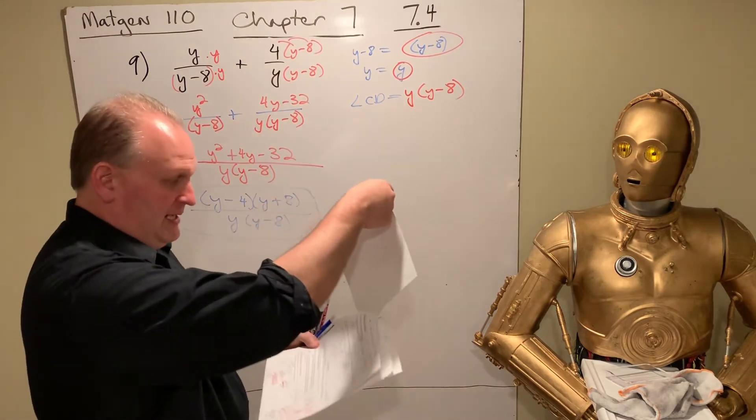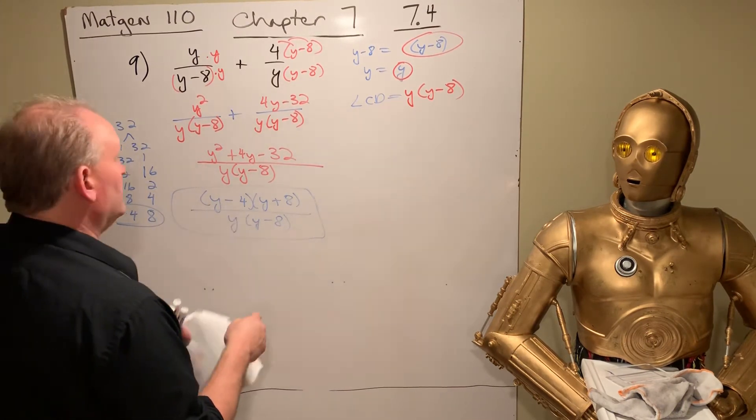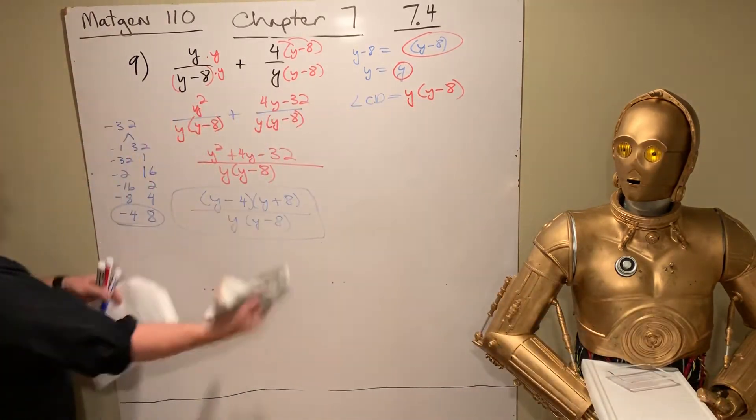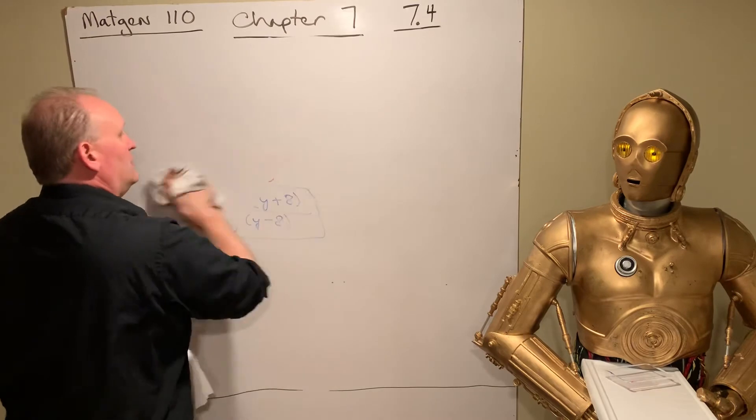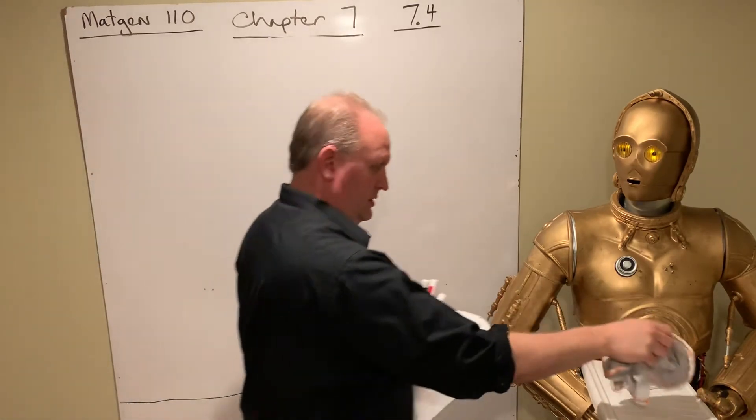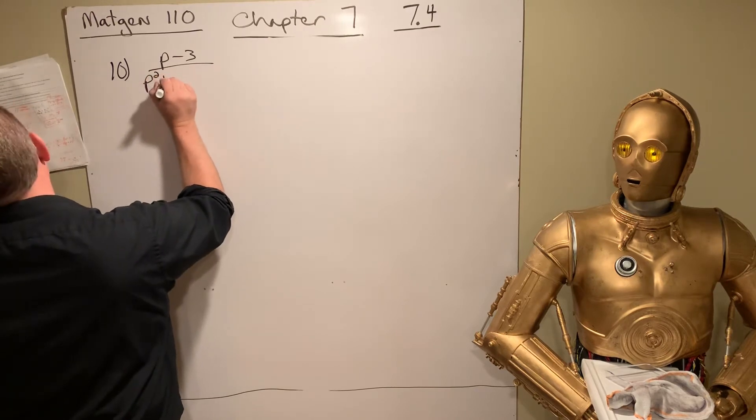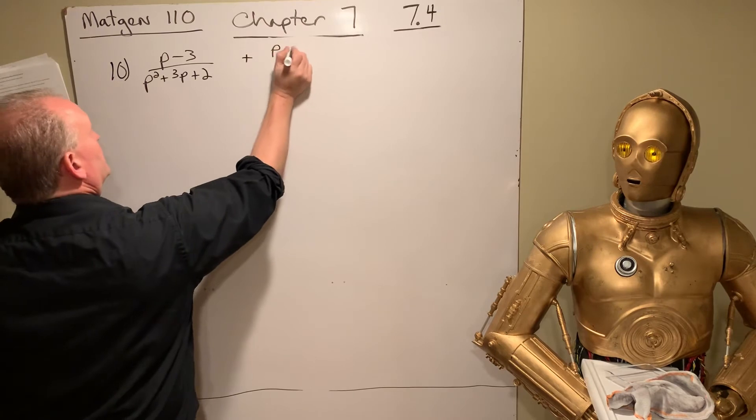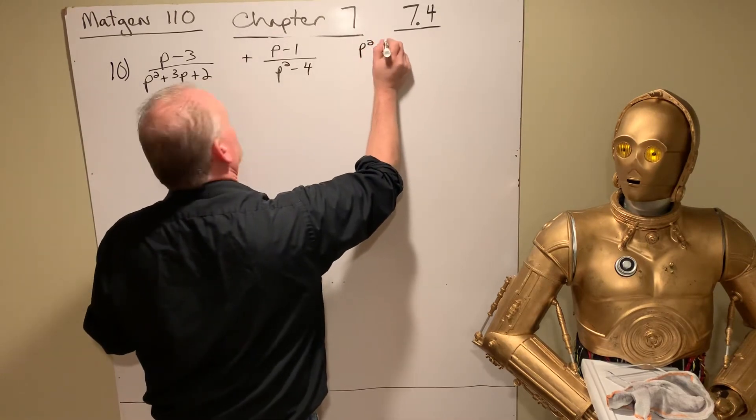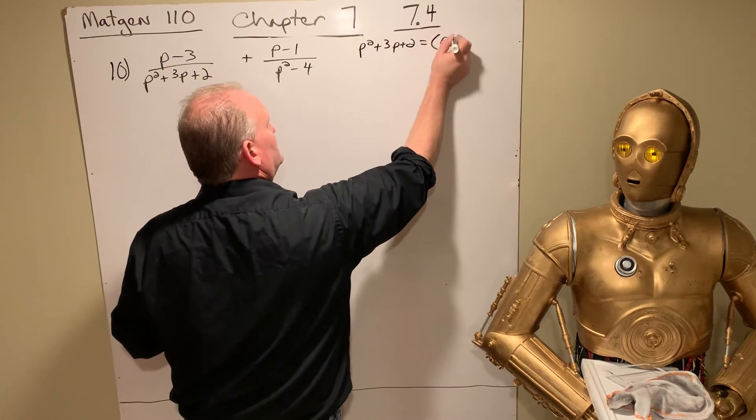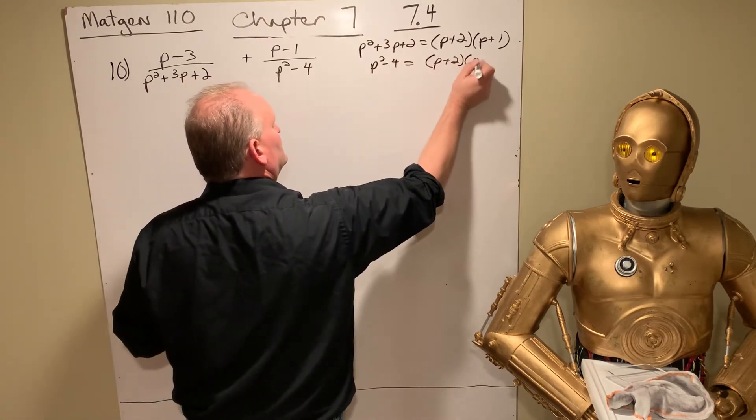And number 10 is much the same here. I'm going to need the board for that. So we'll erase it. So there's number 9. Here comes number 10. So number 10 looks like this. We've got P minus 3 over P squared plus 3P plus 2 plus P minus 1 over P squared minus 4. So let's factor these. P squared plus 3P plus 2. Multiplies to give you 2. Adds to give you 3. That's got to be 2 and 1.